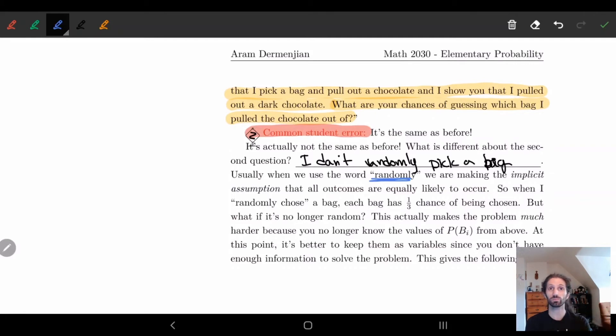There's a one-third chance for the first bag, one-third chance for the second bag, one-third chance for the third bag. Now if I no longer say that, if I now just say I choose a bag, well maybe the bags are different colors and one of them is blue and I like the color blue so I'm always going to choose that bag.